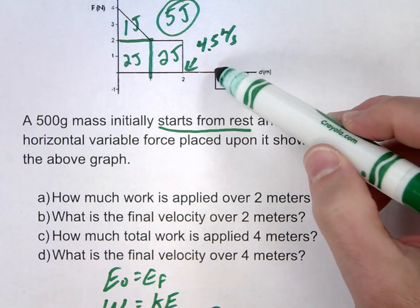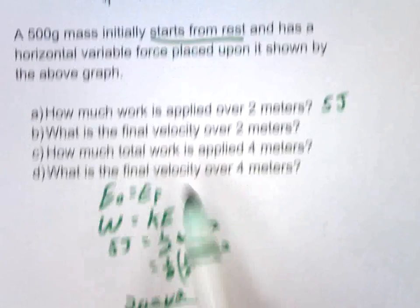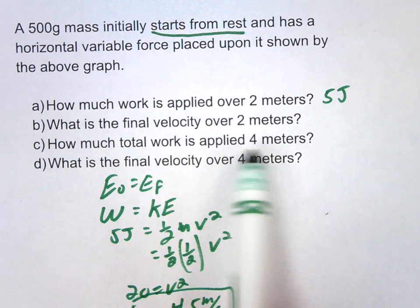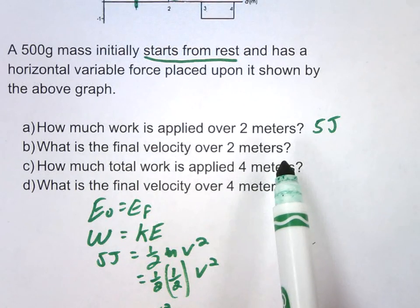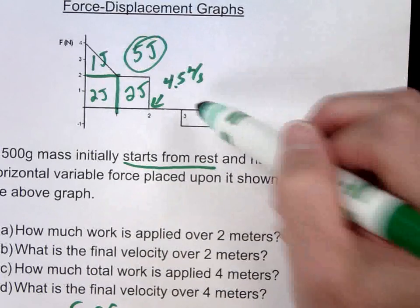So let's go ahead and take a look at this. The next question says, how much total work is applied over the entire 4 meters? So in this problem, you can kind of solve this two ways. The first thing we do want to do is look at the area of this.